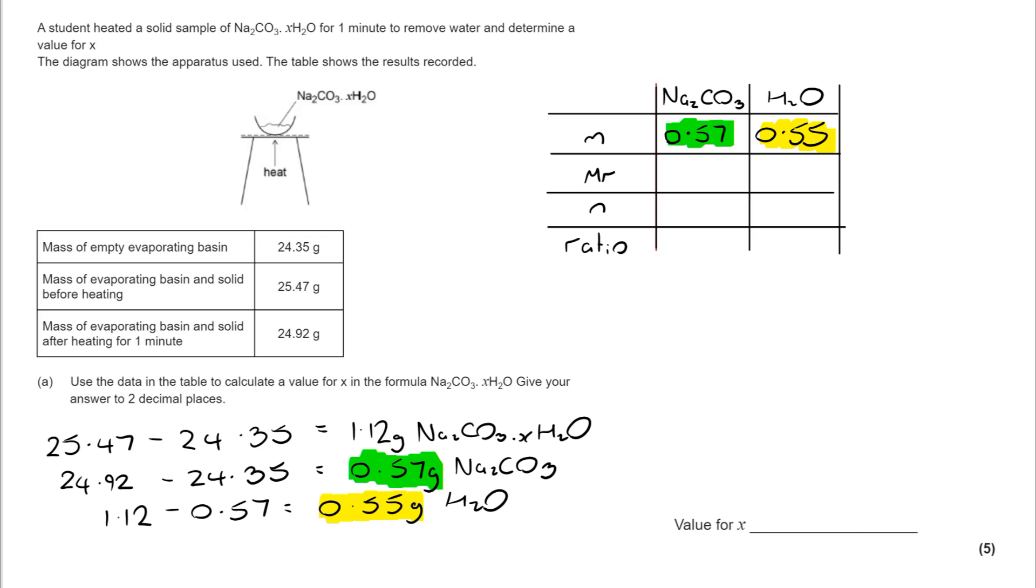From there, I can go to the periodic table. I can use atomic masses to find the molecular masses. Sodium carbonate, 106. And water is 18. And now I've got M and I've got MR, I can work out the number of moles. So I do my calculation, M over MR, and I get these figures, 0.0054 and 0.0306.